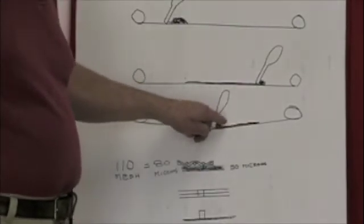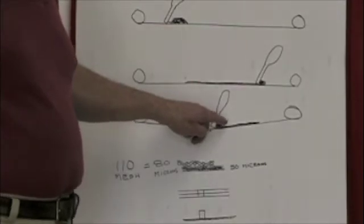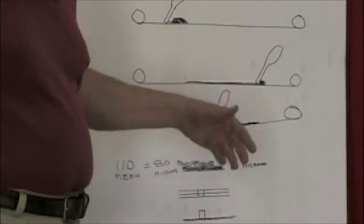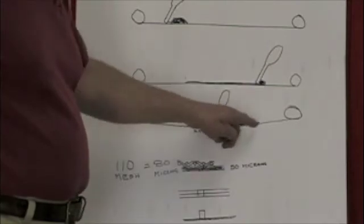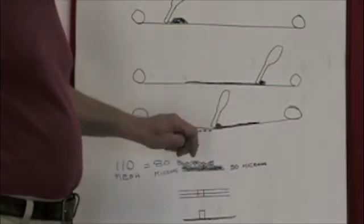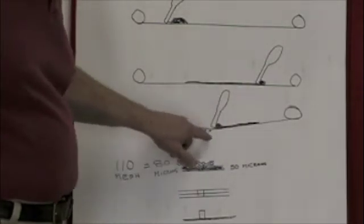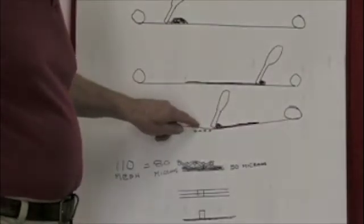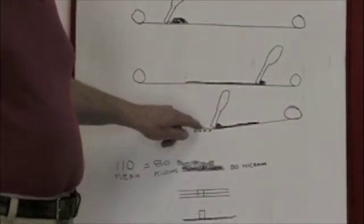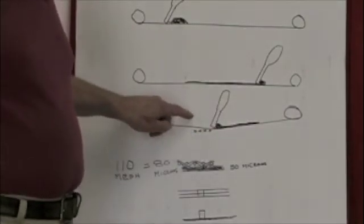And because you have ink in front of the squeegee blade, that's why you really don't need to be doing a flood stroke, except maybe the first time, first stroke of a job, if that. And in this particular drawing, the mesh is deflected down so that the bottom of the screen is just touching the garment we're printing on.